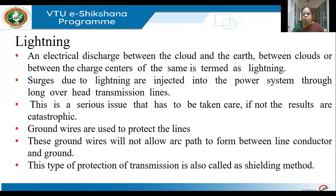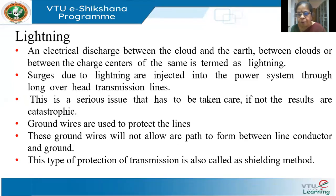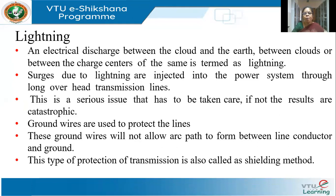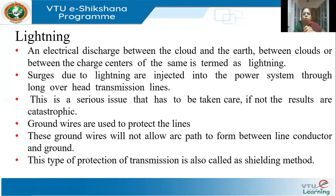The other problem which transmission lines face is the problem of lightning. Some areas are very prone to lightning. Lightning is actually an electrical discharge between the cloud and the earth, or between two clouds, or between the charge centers of two clouds. They are all called lightning, and we know lightning is accompanied by light.